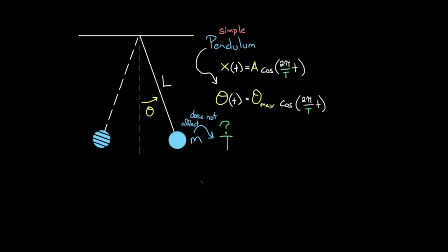So what does affect the period? The formula is T equals two pi times the square root of L over g. The derivation requires calculus, but here's the intuition: L is on top, meaning increasing the string length gives a greater period. So increasing the length should increase the period.